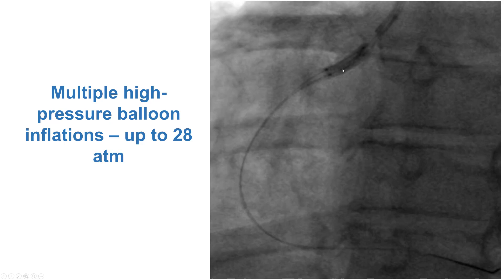We did multiple balloon inflations. This is an example of two smaller balloons inflated up to 28 atmospheres. The way to size this is by adding the diameters of the two balloons and multiplying by two-thirds. For example, if it's a 2.5 and a 2.5, both together would be 5, multiplied by two-thirds is about 3.3. This is the so-called Laplace's law.